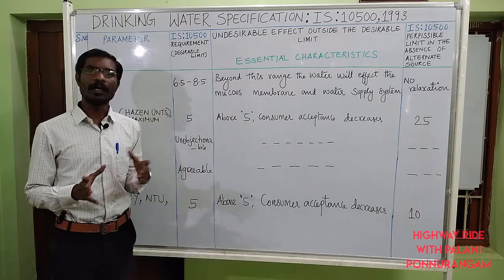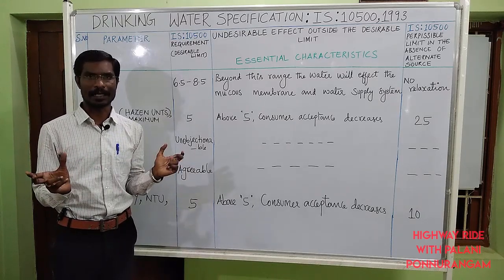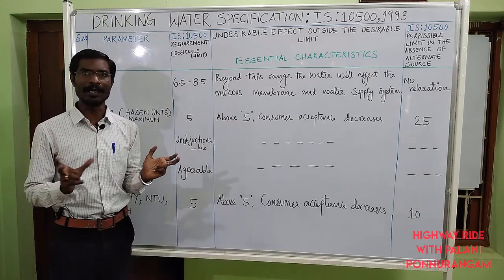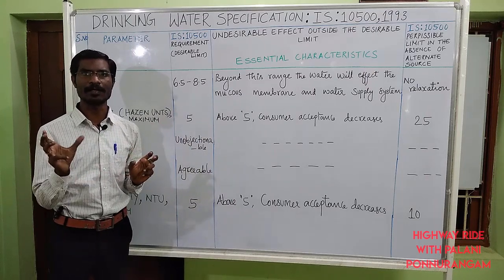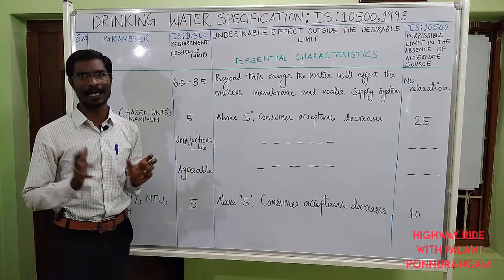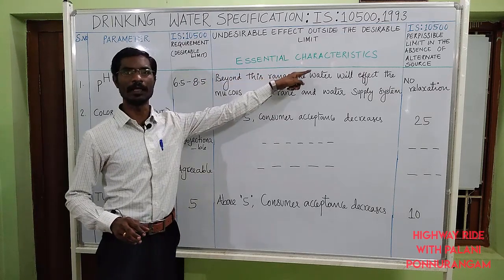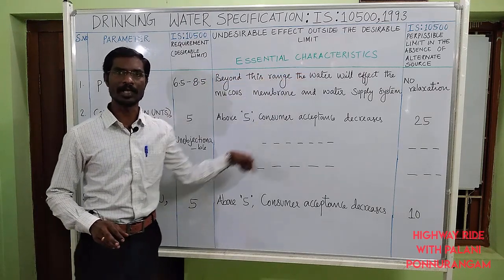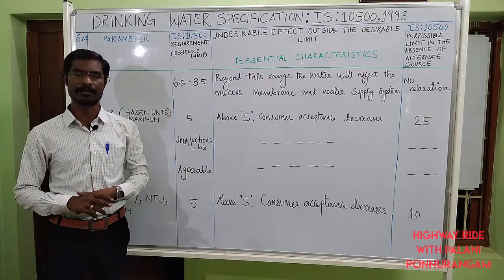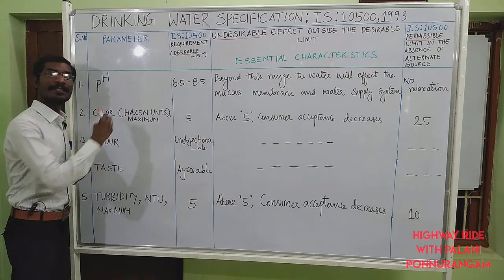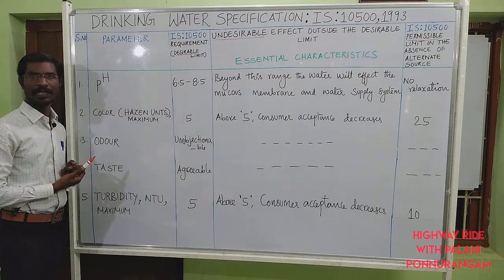The water quality can be segregated into two characteristics: one is essential characteristics, and another one is desirable characteristics. First we will discuss about the essential characteristics of water quality standards. This is the standard table we are going to discuss.